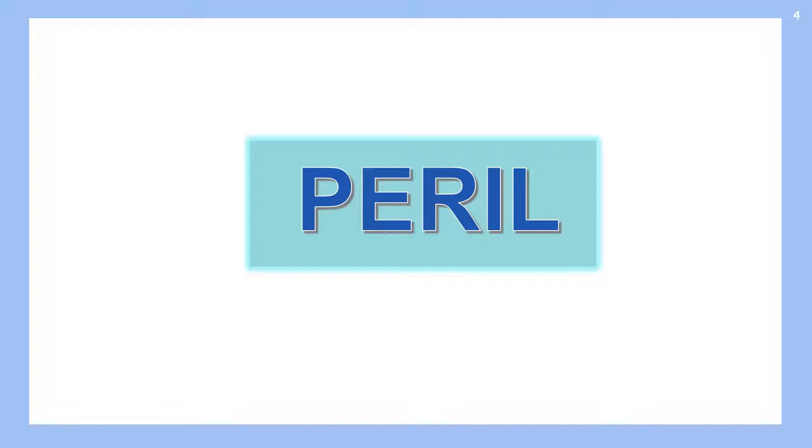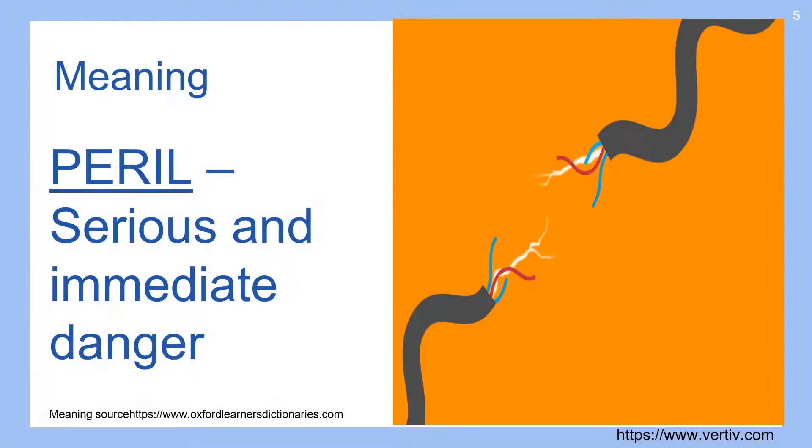The word is peril. Peril means serious and immediate danger. As you can see in the picture, don't touch broken electric wires, especially when they're on. Otherwise, they'll zap you and you'll be in great danger.